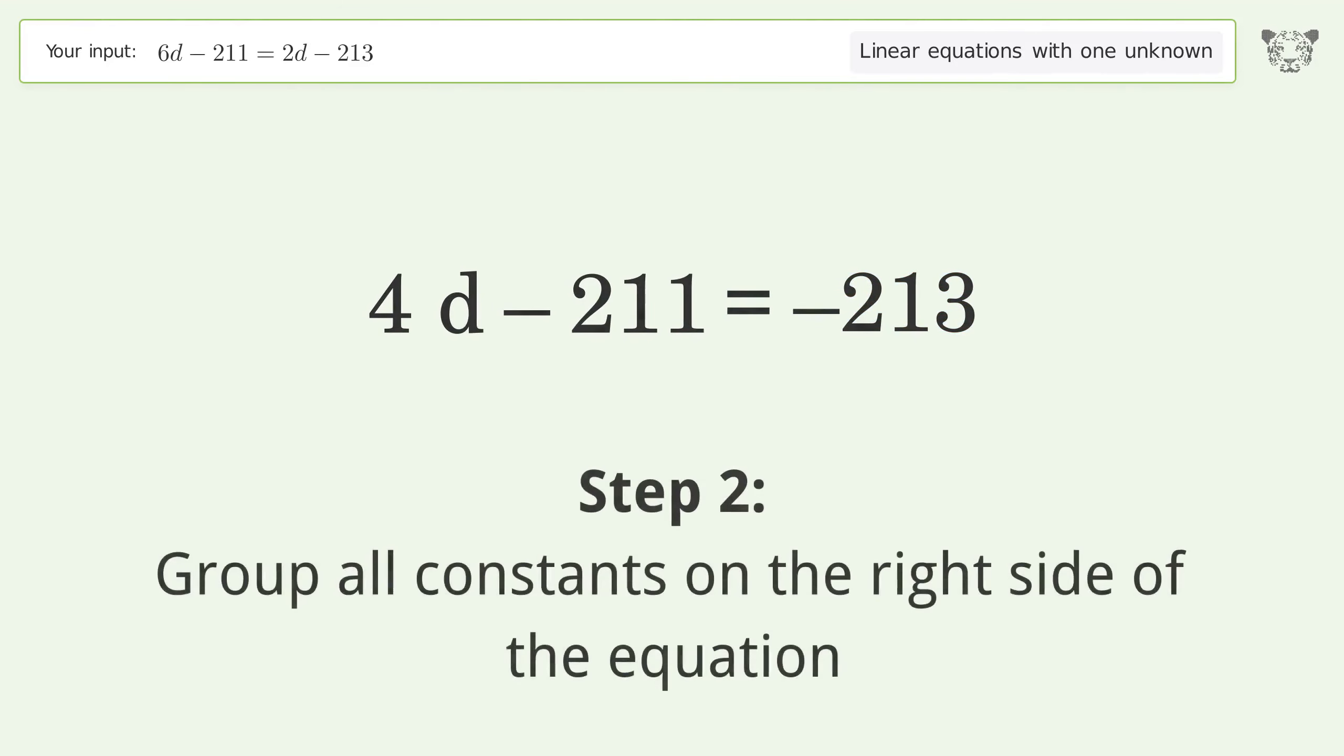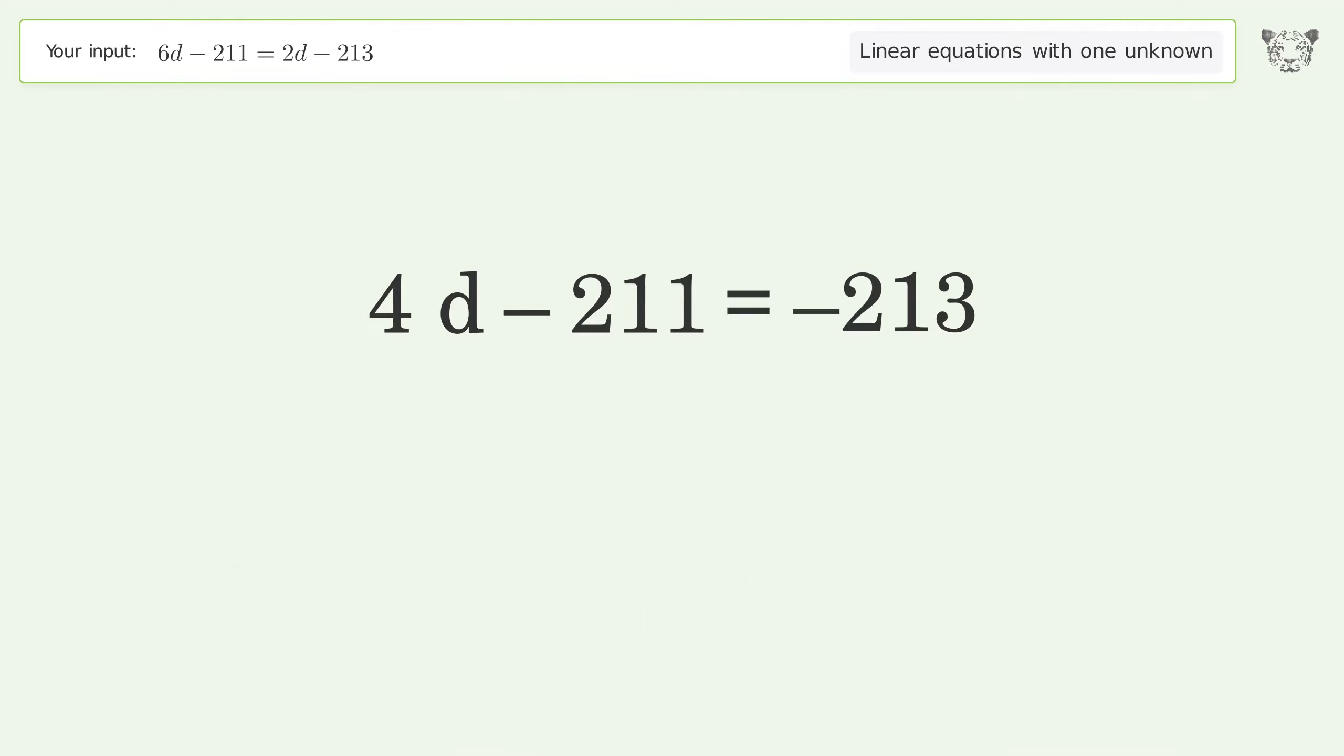Step 2: Group all constants on the right side of the equation. Add 211 to both sides. Simplify the arithmetic.